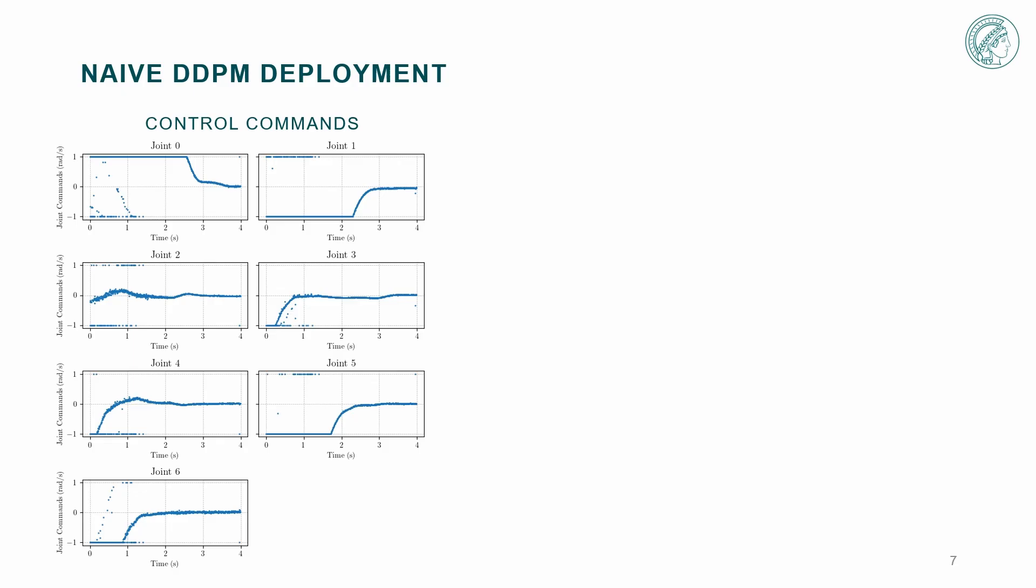Since diffusion models capture the different modes of the MPC, naive deployment can result in high jerk due to inconsistent mode selection in subsequent closed-loop steps.